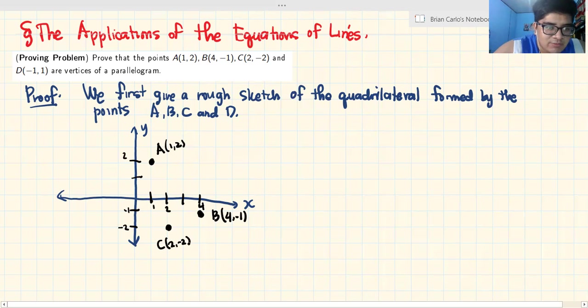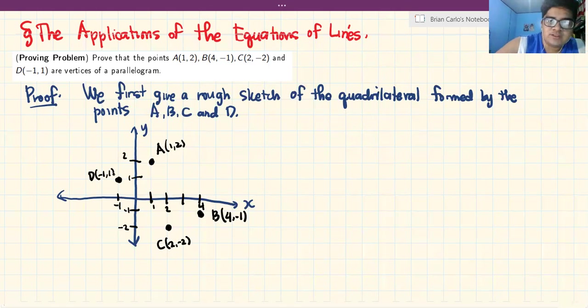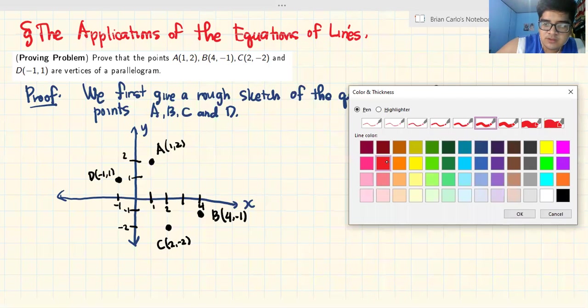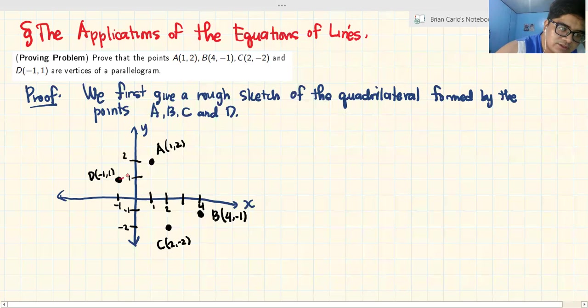Ngayon, finally, it's D, negative 1, 1. Ito yan. This is D (-1,1). Now, if we connect the dots, you're going to see that it somehow forms a parallelogram.